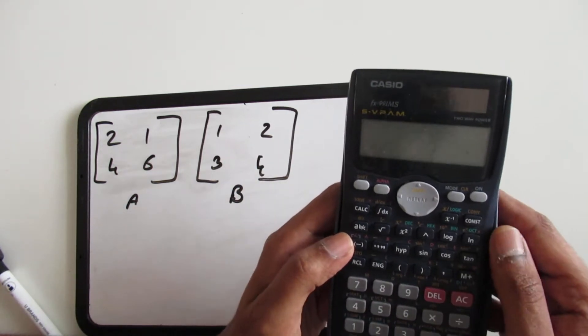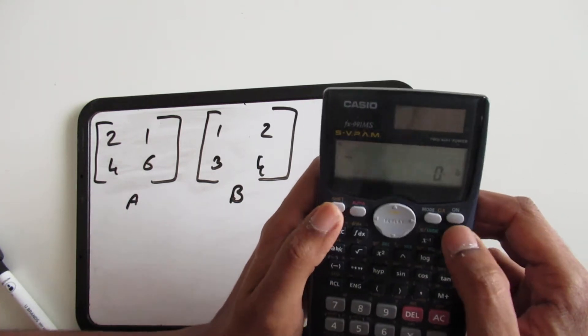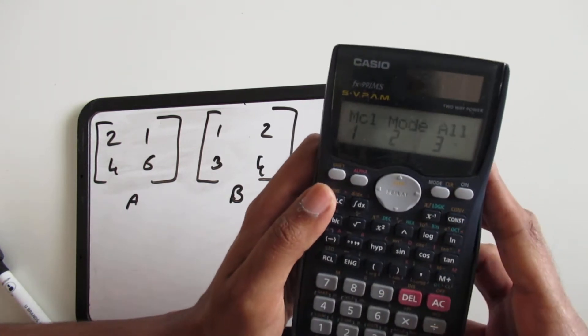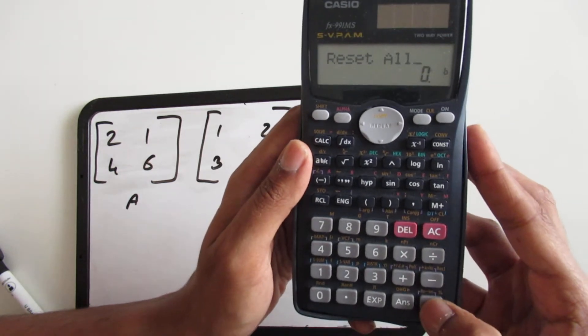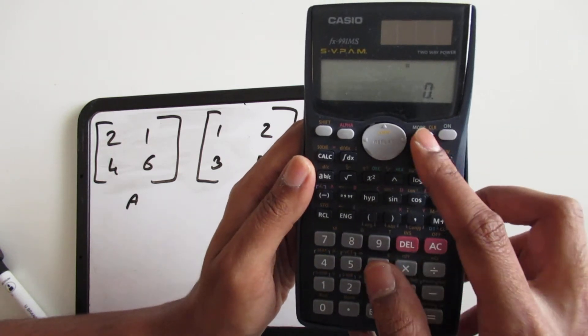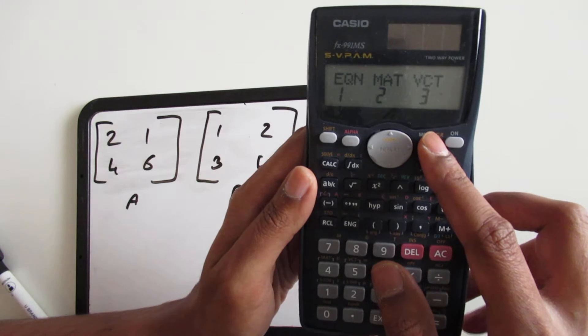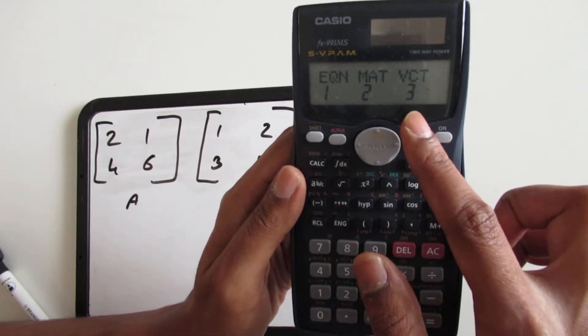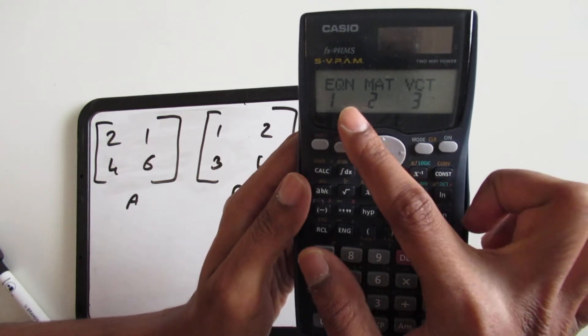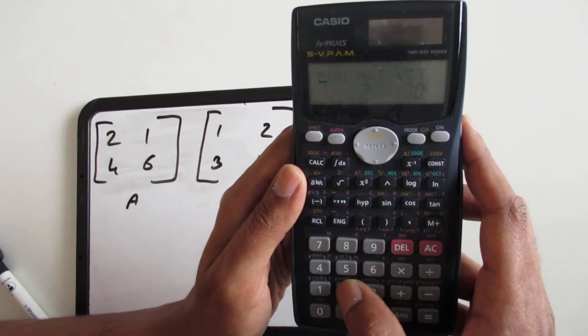We're going to turn it on and shift mode and clear all of it. Now we press mode once, twice, three times till you come across this display option. The second option here is matrices and it says press 2 for that.